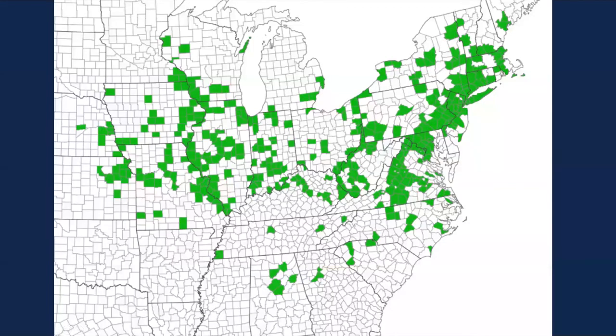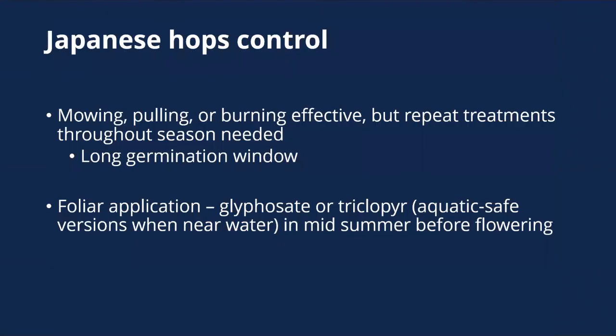Japanese hops is found across the state and typically likes the big river systems where you'll see it most, but it can be found really anywhere. Controlling it — mowing, pulling, and burning since it is an annual can be effective, but because of that long germination window you're going to need repeat treatments. Foliar applications of glyphosate or triclopyr can be effective, but you'd want aquatic-safe versions since this really likes growing next to water. Do that mid-summer before flowering, and a couple different treatments throughout the growing season would be even better.